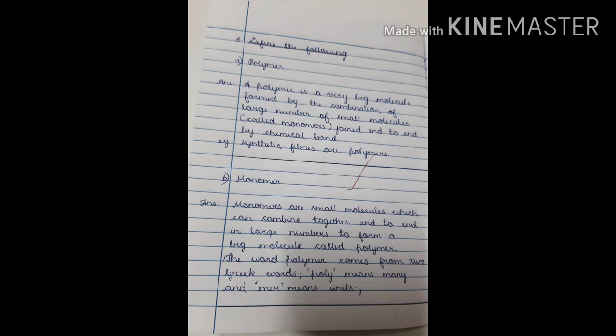Third question: define the following. A) Polymer — a polymer is a very big molecule formed by the combination of a large number of small molecules called monomers, joined end-to-end by chemical bonds. Example: synthetic fibers are polymers. B) Monomer — monomers are small molecules which can combine together end-to-end in large numbers to form a big molecule called a polymer. The word polymer comes from two Greek words: poly means many, and mer means units.